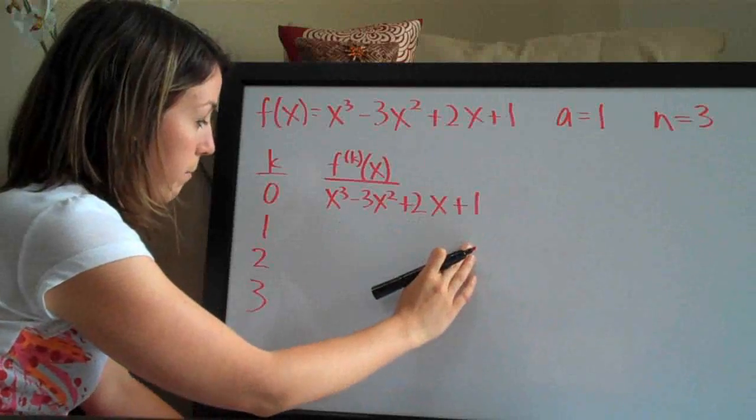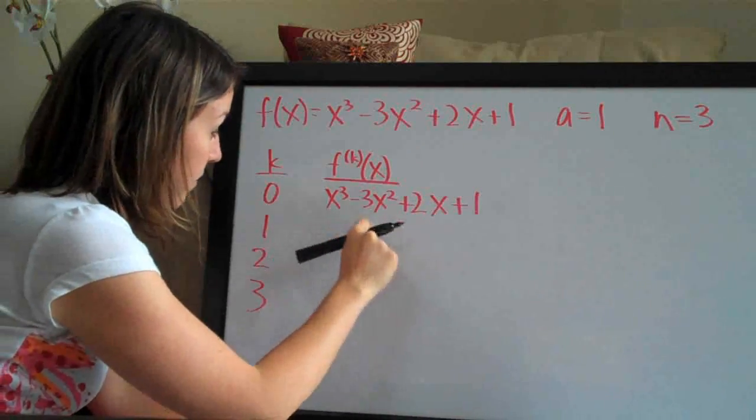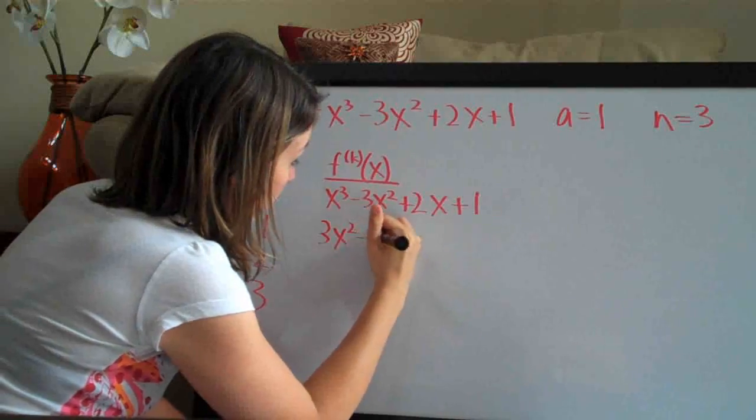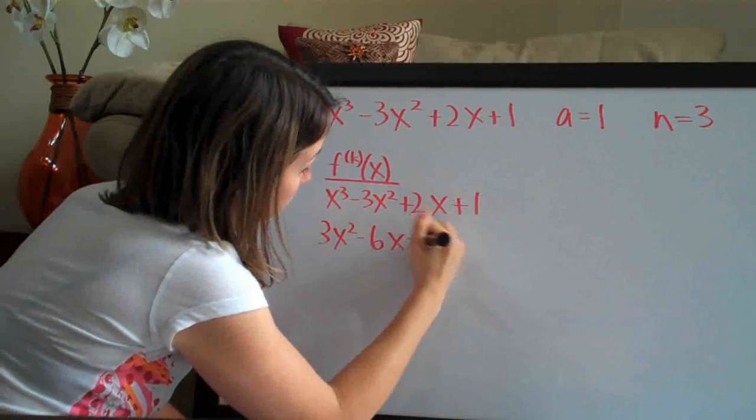Right here, I'm just going to breeze through it. So first we take the derivative of this original function. We get 3x squared minus 6x plus 2.